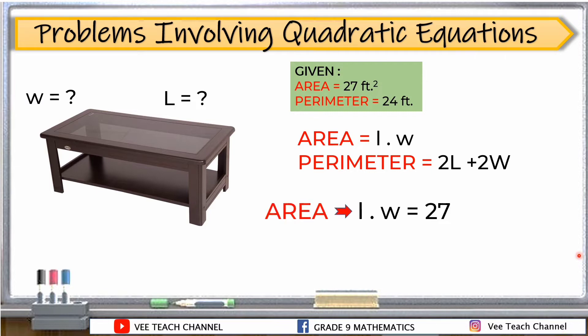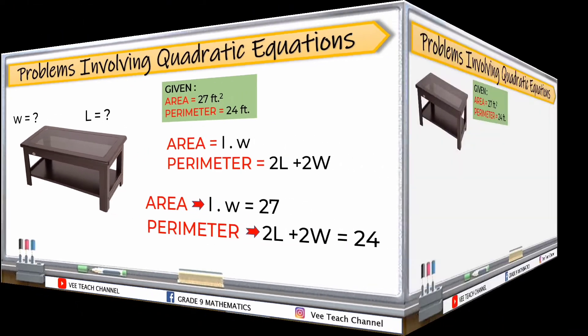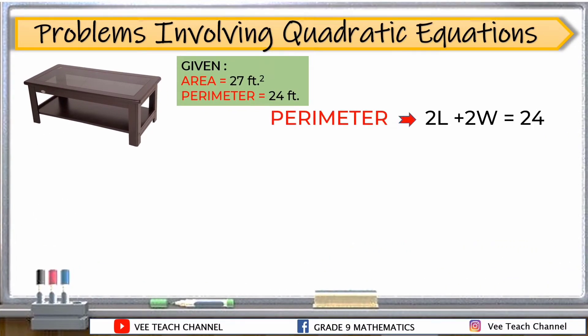Let's recall the formula in finding the area and the formula in finding the perimeter. In area, we have length times width. Sa perimeter, 2 length plus 2 width. Yung ating formula sa pagkuhan ng area and perimeter ng ating rectangle. Now, let's substitute the given to our formula. Ang area nga natin is length times width. Ang nakuha natin according sa problem is 27 square feet. Ilagay natin L or length times width is equal to 27.